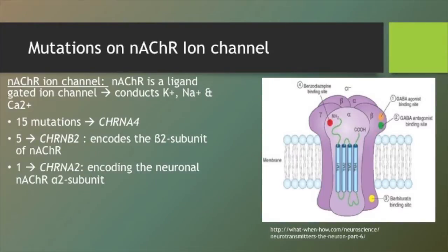The nAChR ion channel is a ligand-gated ion channel which conducts potassium, sodium, and calcium. The nAChR ion channel also has important neuromodulatory functions, including modulation of GABA and glutamate release — the main inhibitory and excitatory neurotransmitters of the brain.